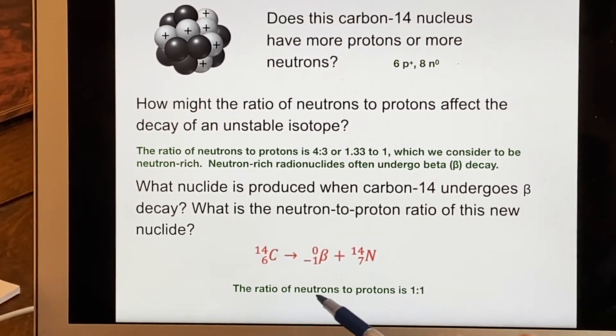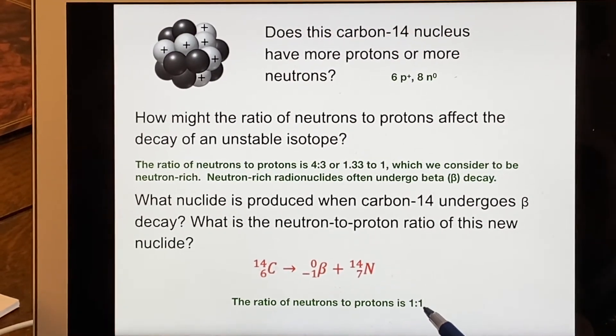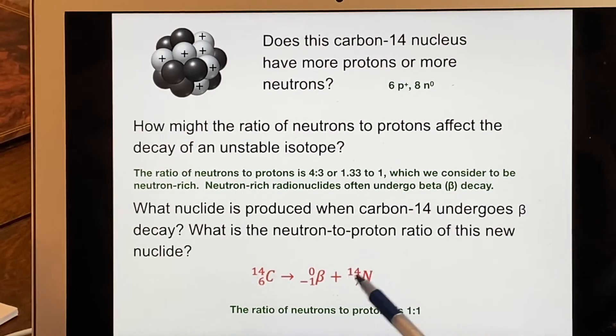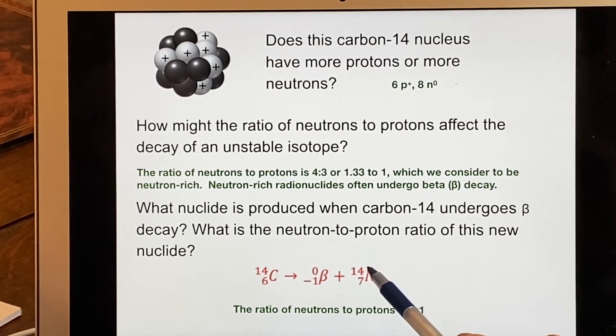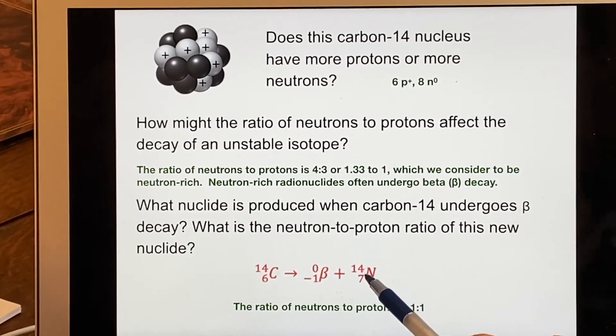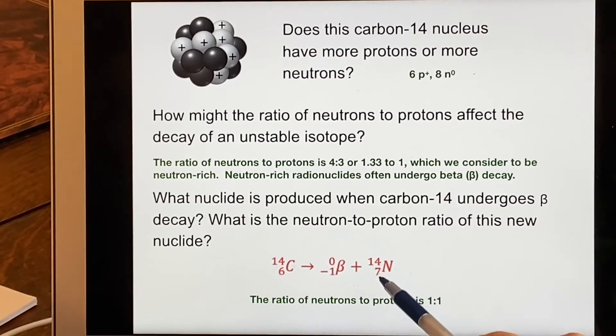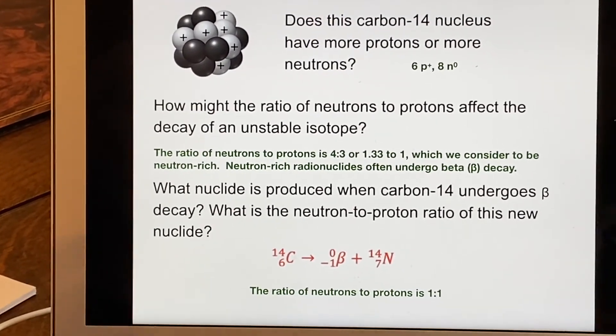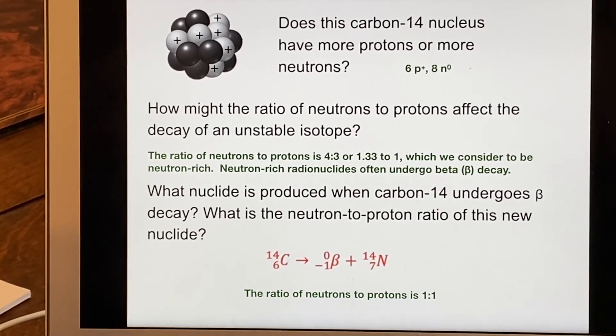And when I look at the ratio of neutrons to protons, it ends up being one to one. Wait, what? I have 14. Oh, that's both, right? That's protons and neutrons. So if you take 14, you subtract off the seven protons, you find out you have seven neutrons. And you say seven to seven, one to one. And this is a stable configuration.